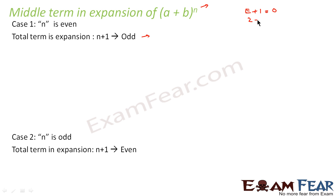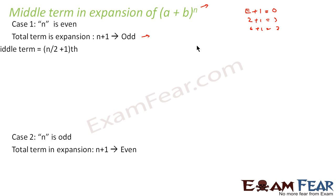For example, 2 is even, 2 plus 1 gives 3, which is odd. 6 is even, 6 plus 1 gives 7, which is odd. So when the total number of terms is odd, the middle term is the (n/2 + 1)th term. You can verify this.